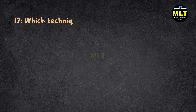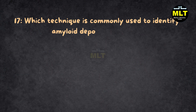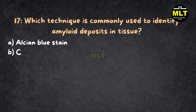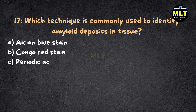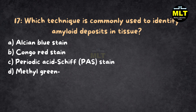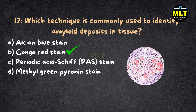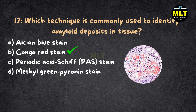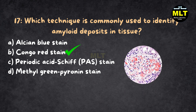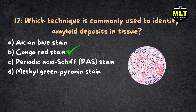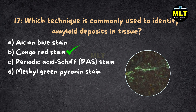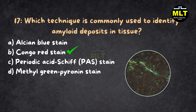Question 17: Which technique is commonly used to identify amyloid deposits in tissue? Options: A. Alcian blue stain, B. Congo red stain, C. Periodic acid-Schiff (PAS) stain, D. Methyl green pyronin stain. Correct Answer: B. Congo red stain. Explanation: Congo red stain is specifically used to identify amyloid deposits in tissue. The amyloid fibers bind to the dye, and under polarized light they exhibit an apple green birefringence, which is a hallmark of amyloidosis.